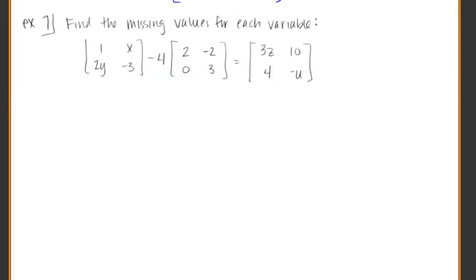Let's practice this just constant multiplication and adding and subtracting matrices just one more time here with example number 7. So what you're trying to do is find the missing values for each variable. If you look in here, we have an x variable. We have a y. We look like we have a z over here and then a u right there. So we need to figure out what is x and what is y and what is z and what is u represents.